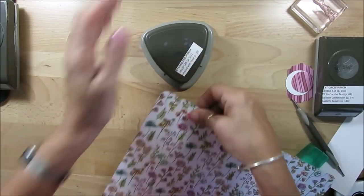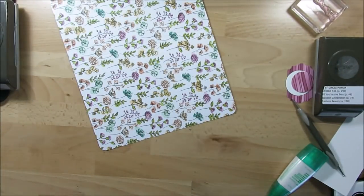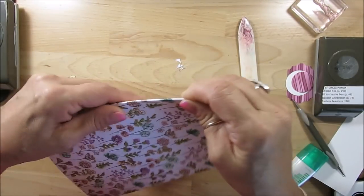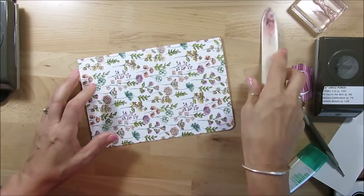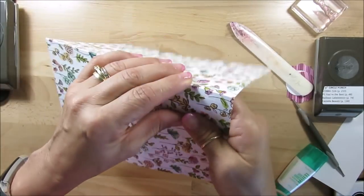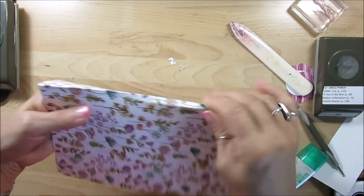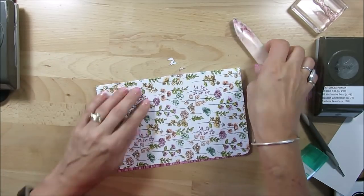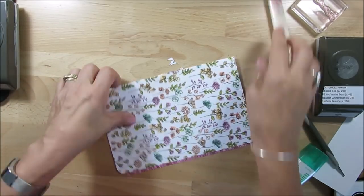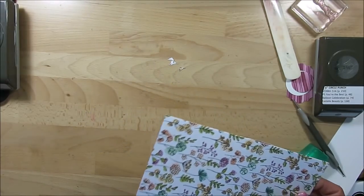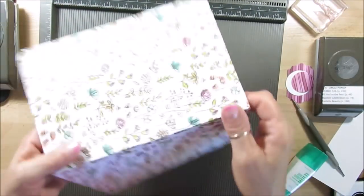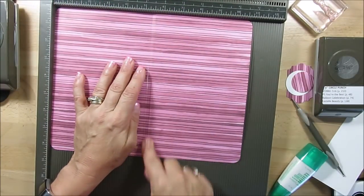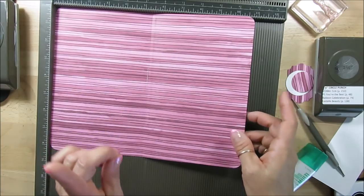Now we're going to reinforce our score line and that's very important. Usually you want to score on the side that goes inside and that's going to help the score not to crack. See, it cracked there - perfect example. So not to crack, this is the side that you want on the outside. You would have scored on this side and that would not crack. So remember that.